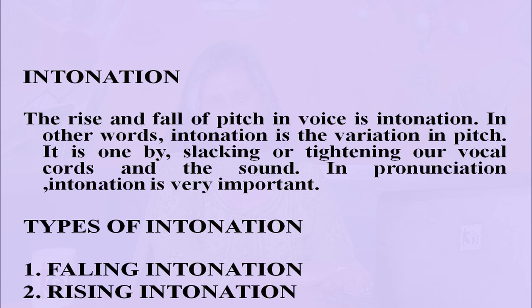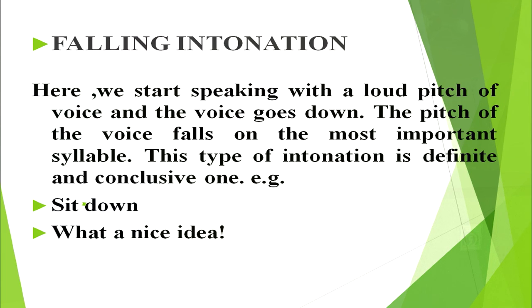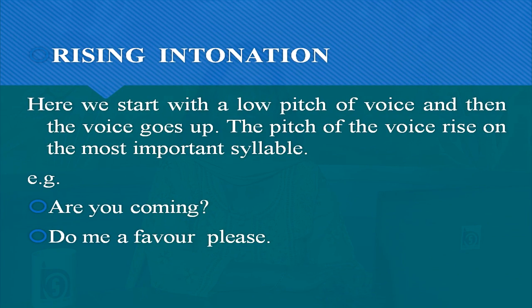Now let's discuss intonation. The rise and fall of pitch in the voice is intonation. In other words, intonation is the variation in pitch, achieved by slacking or tightening our vocal cords. In pronunciation, intonation is very important. There are two types of intonation: falling intonation and rising intonation. In falling intonation, we start speaking with a loud pitch of voice and the voice goes down; the pitch falls on the most important syllable. This type is definite and conclusive — for example: 'Sit down.' 'What a nice idea.' In rising intonation, we start with a low pitch of voice and the voice goes up; the pitch rises on the most important syllable — for example: 'Are you coming?' 'Do me a favor, please.'